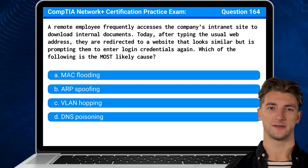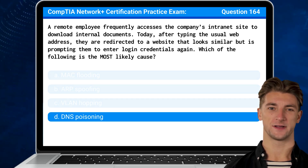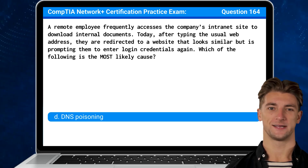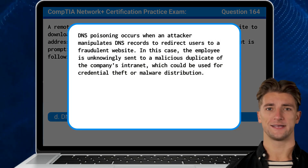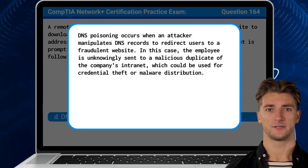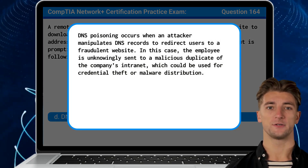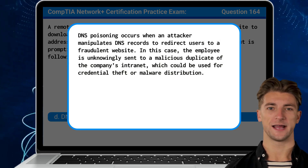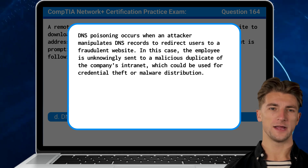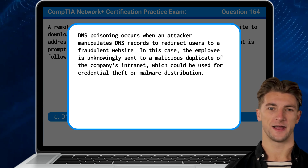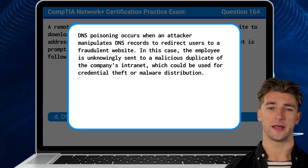The answer is D, DNS poisoning. DNS poisoning occurs when an attacker manipulates DNS records to redirect users to a fraudulent website. In this case, the employee is unknowingly sent to a malicious duplicate of the company's intranet, which could be used for credential theft or malware distribution.